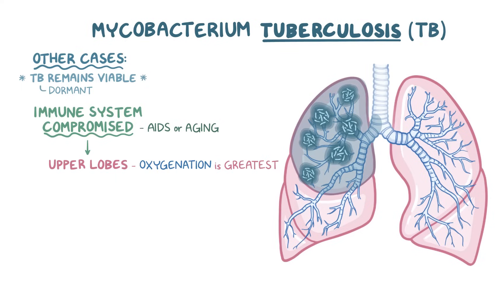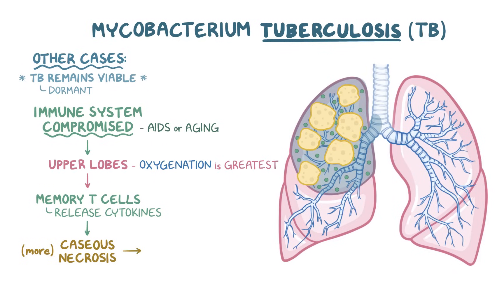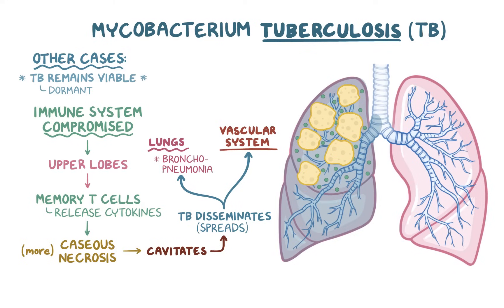Since they were previously exposed, the immune system's memory T cells quickly release cytokines to try and control the new outbreak, which forms more areas of caseous necrosis. This time, though, it tends to cavitate, or form cavities, which can allow the bacteria to disseminate through airways and lymphatic channels to other parts of the lungs, causing bronchopneumonia. It can also spread via the vascular system and infect almost every other tissue in the body, called systemic miliary TB.